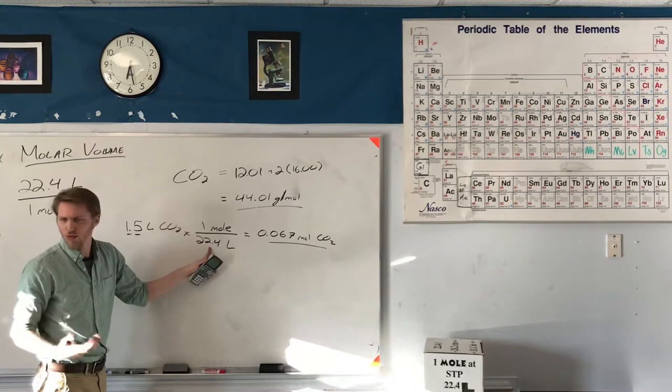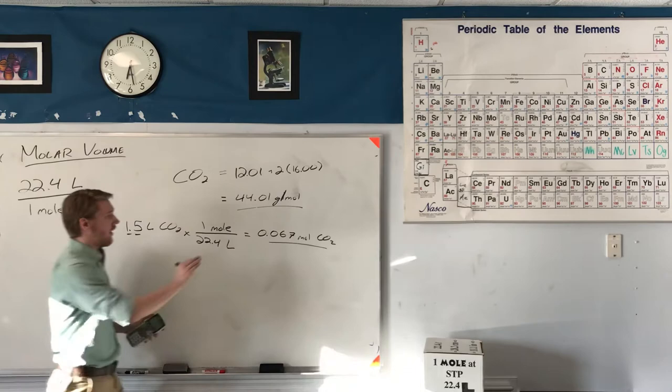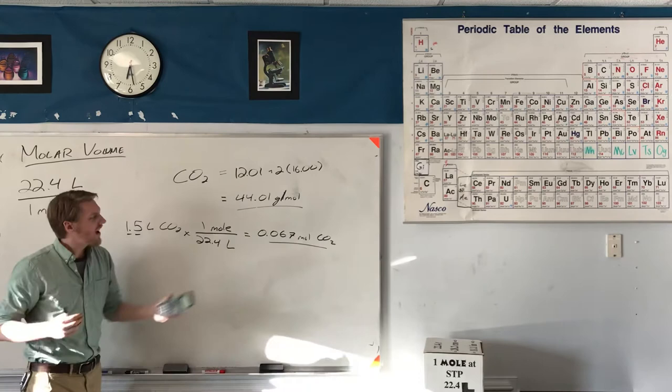I've put two significant digits there, by the way, because that had two significant digits. This one has three, so that's going to limit me to two because this one has fewer significant digits. That's how many moles of CO2 were in that balloon, that 1.5 liter balloon.